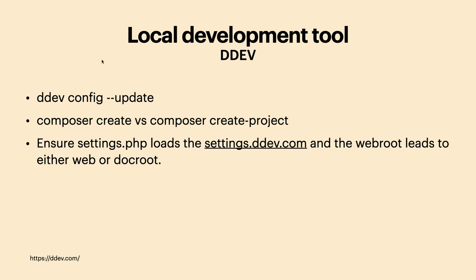If you use DDEV and are trying to install any of these projects to check them out — I like to see what other people have done and reverse engineer my way through it — if they have default content, that's fantastic. One command not everybody uses is `ddev config update`. What that does is update your config.yaml — some projects use `docroot` and some use the `web` folder as the main source — and it also updates settings.php to load the database on the local environment.